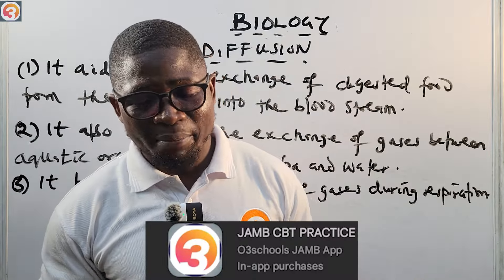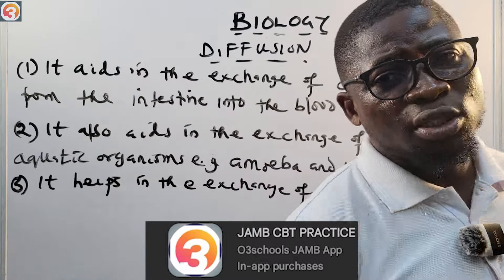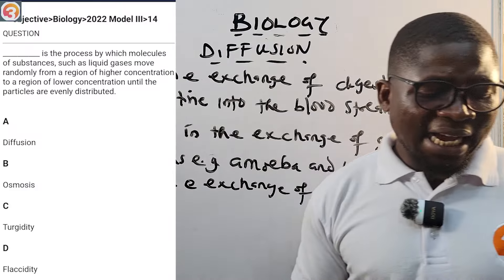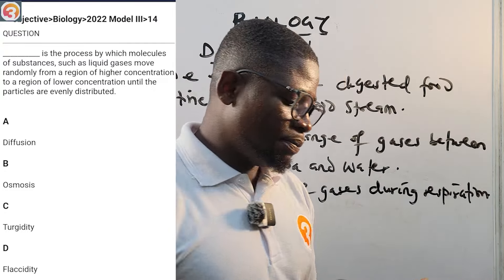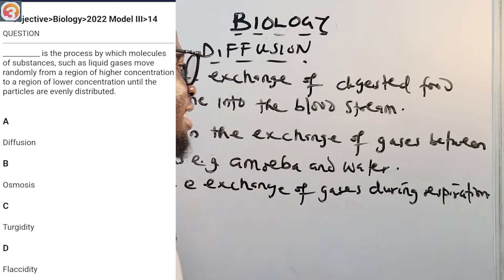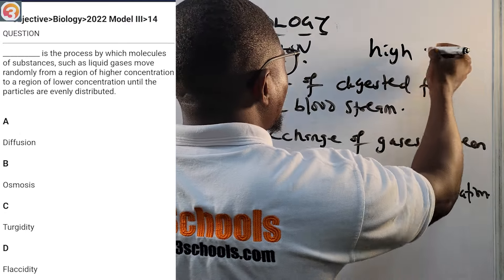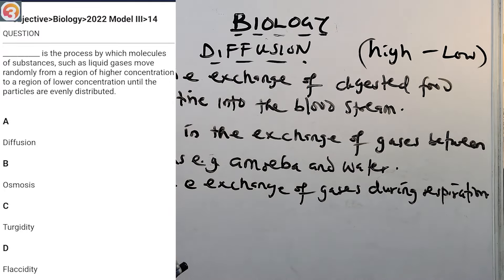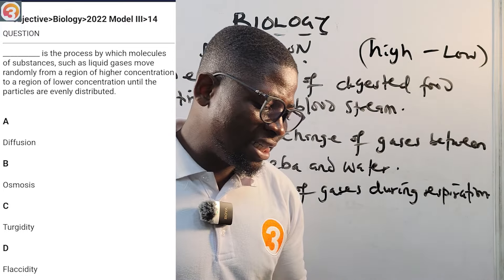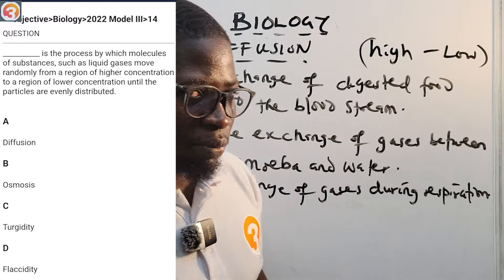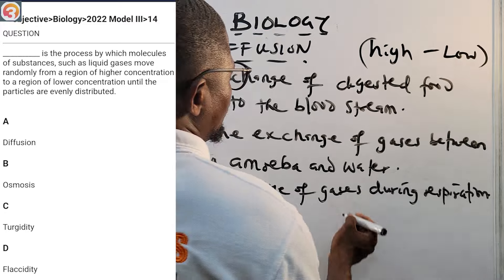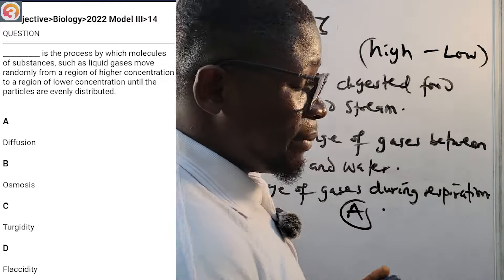Now let's go to the O2School Jam app and look at a 2022 question on this topic. Question number four, 2022, says: 'Dash is the process by which molecules of substances such as liquids and gases move randomly from a region of higher concentration to a region of lower concentration, until the particles are evenly distributed.' Options: A — diffusion, B — osmosis, C — turgidity, D — flaccidity. The correct answer is A, diffusion. If it were from low to high concentration, we'd be talking about osmosis. There are many more questions like this on the app — please download and start practicing.